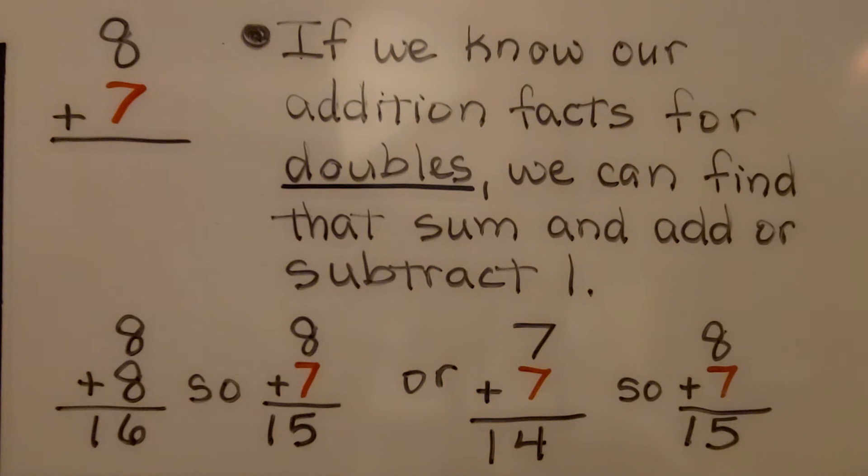Here's another way. If we know our addition facts for doubles, we can find that sum and add or subtract 1. We have our 8 plus 7. We can think, well, I know that 8 plus 8 is 16, so 8 plus 7 must be 1 less, it must be 15.